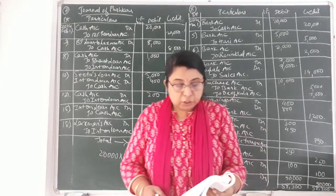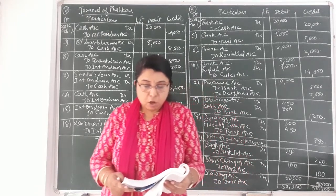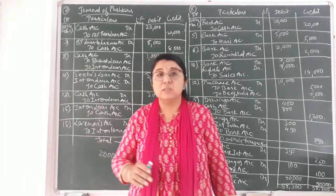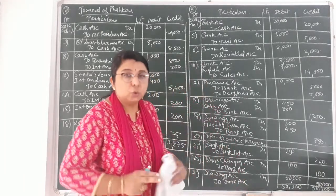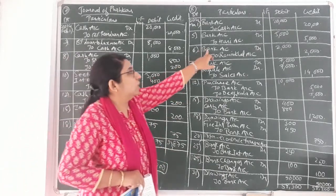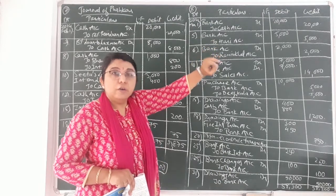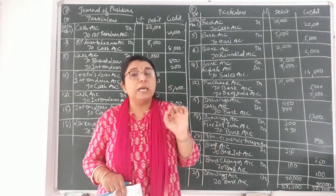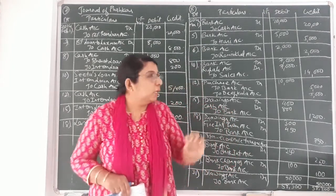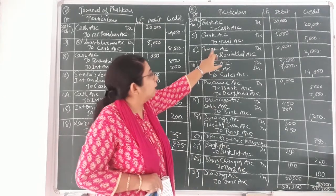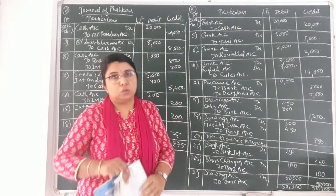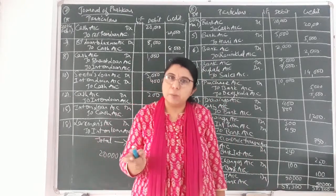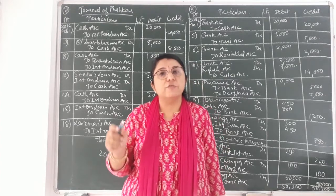Next, sixth date: a cheque of Rs. 2,000 received from Ramnik Lal for dues. Previously that amount was due from Ramnik Lal. We received the cheque, not cash, so bank balance will increase by Rs. 2,000. Bank is the receiver — debit the receiver. Entry: bank account debit 2,000 to Ramnik Lal's account credit 2,000. Ramnik Lal is the giver — credit the giver. Narration: being dues received from Ramnik Lal.